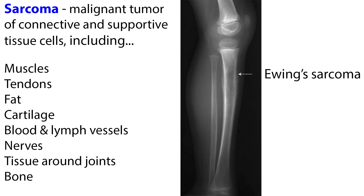Sarcoma is a malignant tumor of connective tissue and supportive tissue cells, including muscles, tendons, fat, cartilage, blood and lymph vessels, nerves, and tissue around joints. Sarcoma can also originate in the bone. Soft tissue and bone sarcomas are the main types of sarcomas.